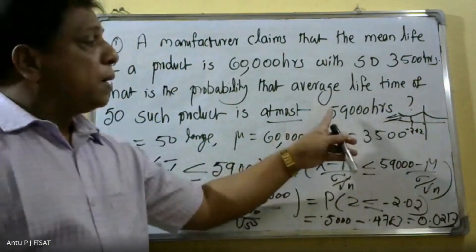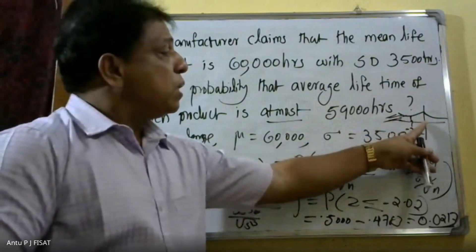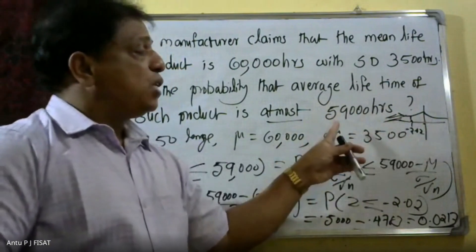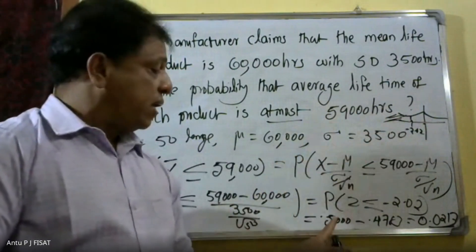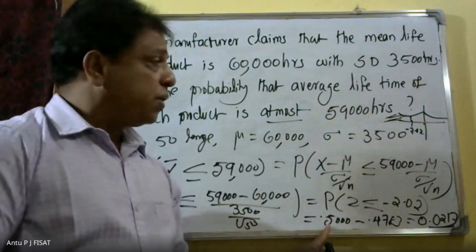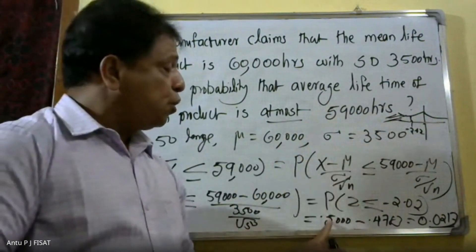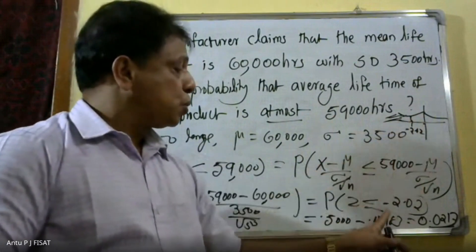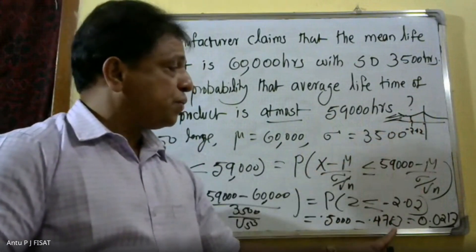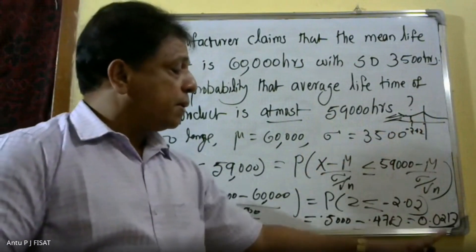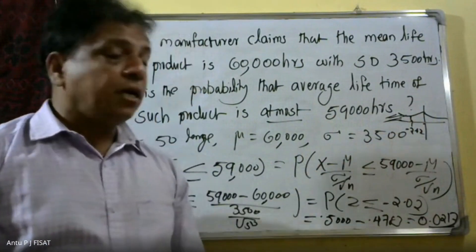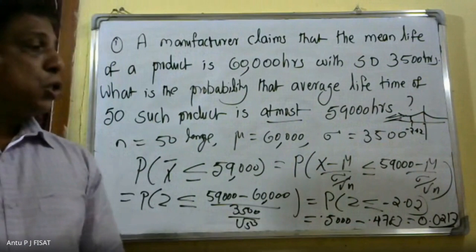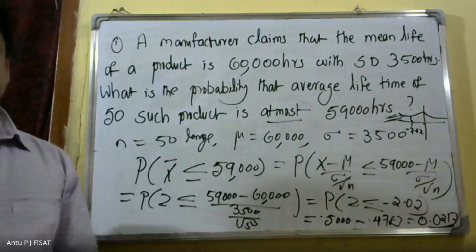The table value corresponding to 2.02 is 0.4783. Subtracting from 0.5 gives 0.5 minus 0.4783, so the final answer is 0.0217.